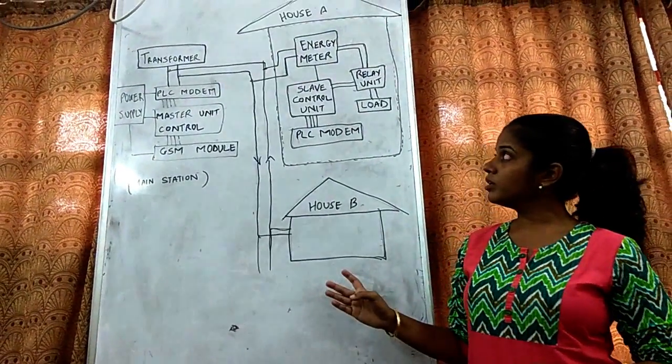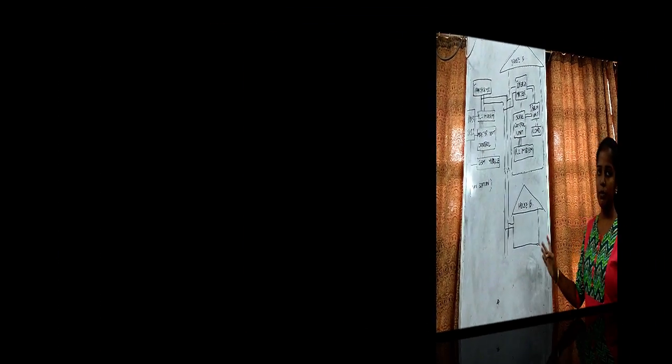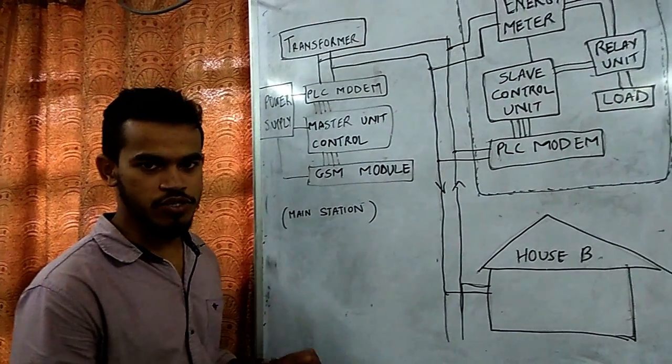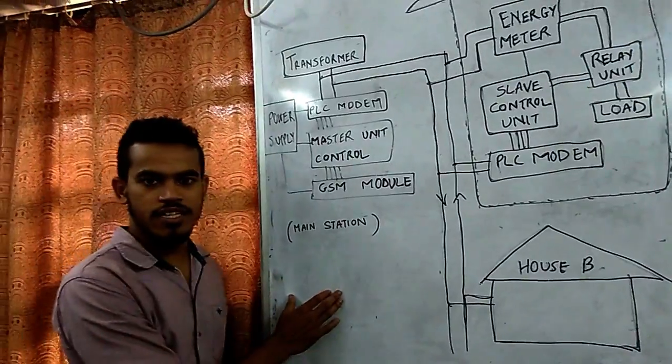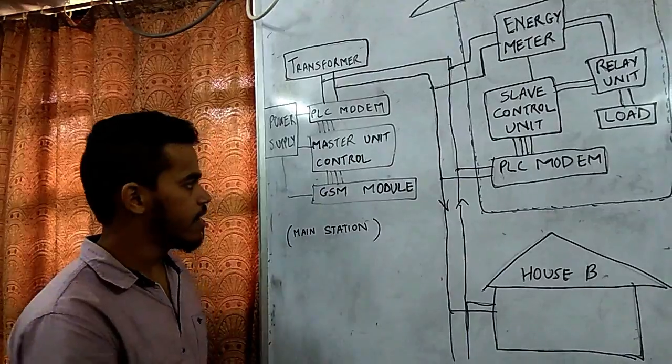Now I will hand over to my colleague to show you the working of the block diagram. So here is our block diagram of our project. The distribution transformer will be having a controller, that is Atmega 328.